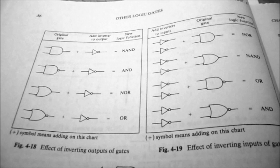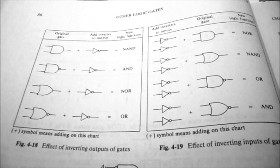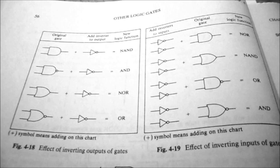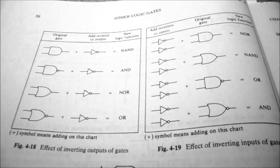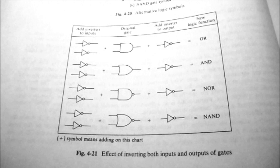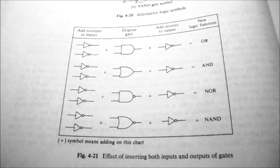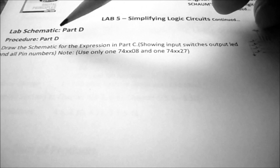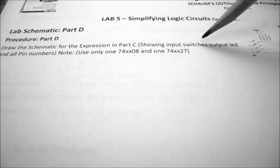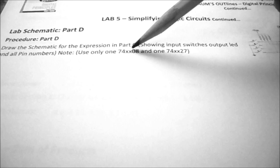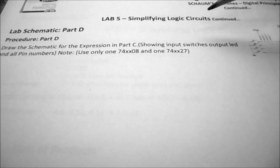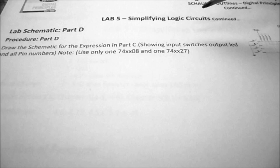Figure 4-18 and 4-19 discuss the effect of adding inverters to either the output or the input of the gates. If you invert the inputs of an AND gate, you end up with a NOR gate. Figure 4-21 shows the effects of inverting both the inputs and outputs of a gate — you can actually change an AND gate into an OR gate. For Part D, we want you to draw the schematic for the expression in Part C, showing the input switches, the output LED, and all pin numbers, using just the 7408 and the 7427. I'm going to show you how to do that in Multisim.